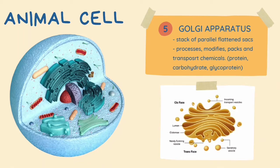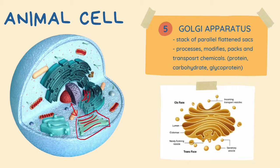After that we have the Golgi apparatus. It looks very similar to the endoplasmic reticulum, but it is easy to differentiate them due to position and shape. The Golgi apparatus is a stack of parallel flattened sacs, whereas the endoplasmic reticulum is interconnected. The Golgi apparatus is normally located further from the nucleus compared to the endoplasmic reticulum, which is located nearby the nucleus.